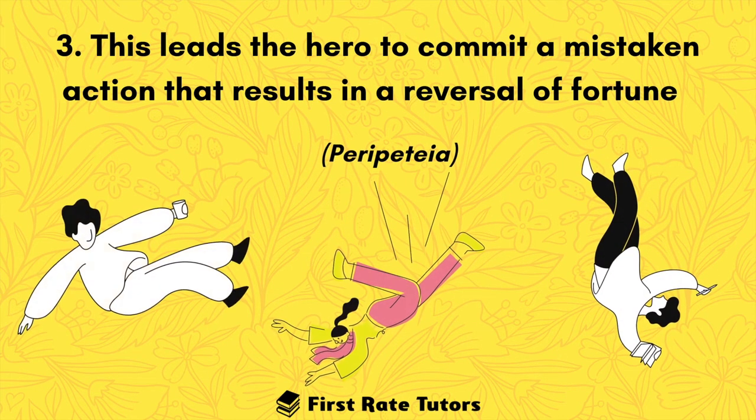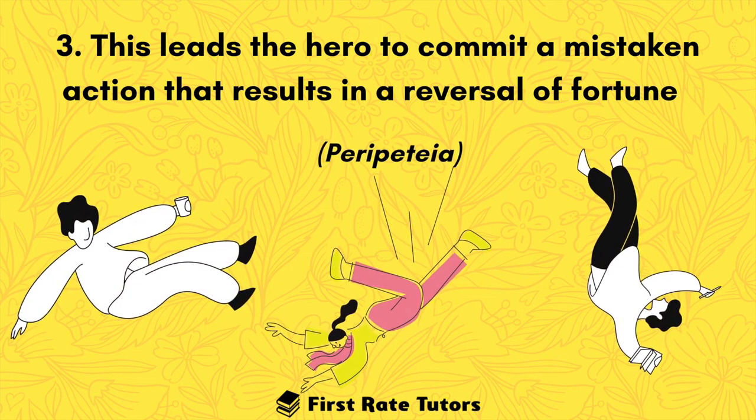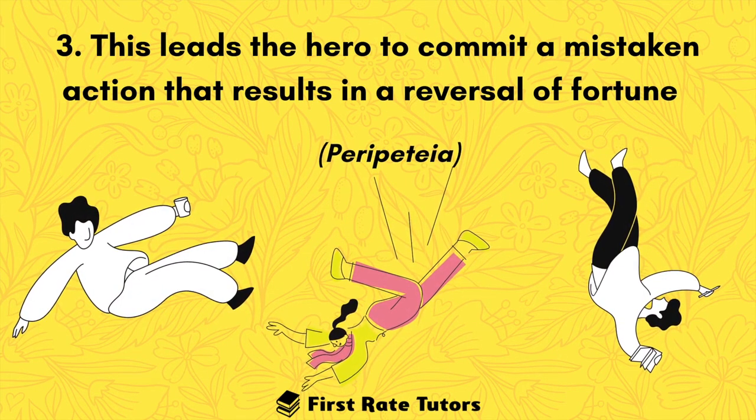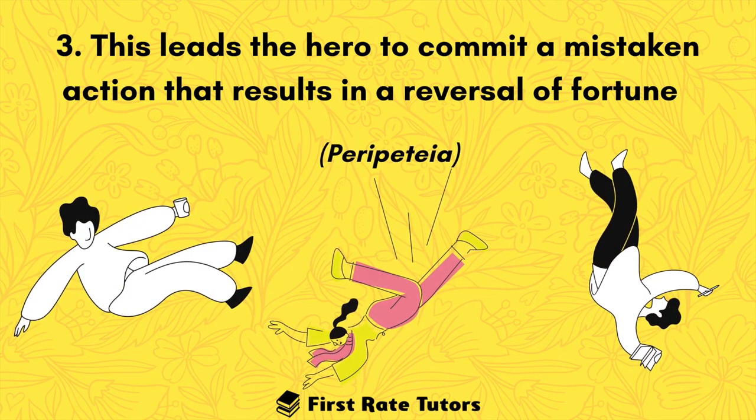This hamartia consequently leads the hero to commit a mistaken action, or a series of mistaken actions, that result in a reversal of their fortune — what Aristotle called peripecia.